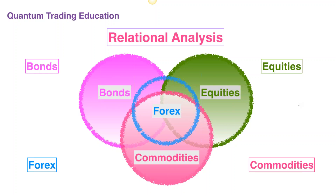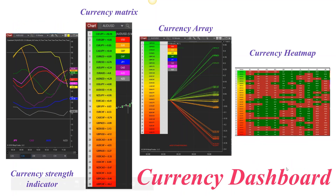This slide is from the education program - from the relational analysis module. It really explains how all four capital markets are very intimately connected. Once you understand the connections, it's not so much to do with correlation, it's really to do with how they interact with one another. When bonds are moving, you can identify which currencies are likely to be moving. It's the intimate relationships that the four capital markets have with one another and how we can leverage that.